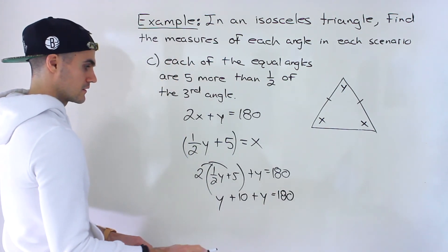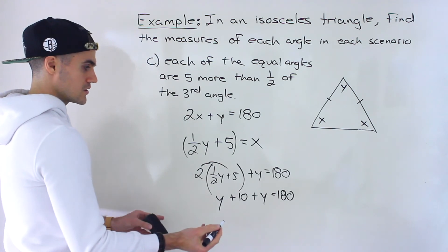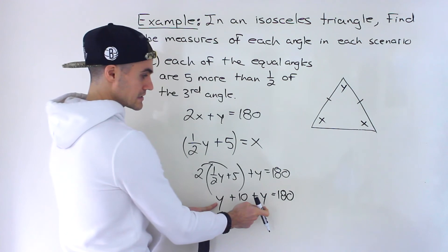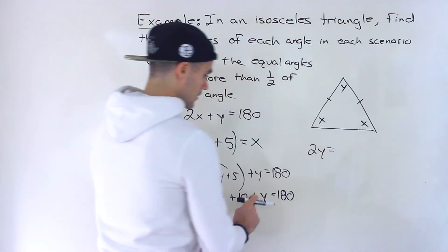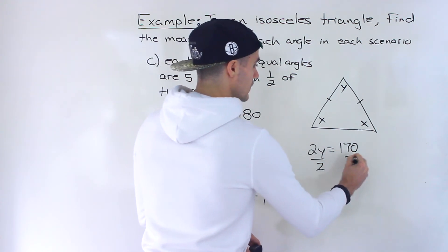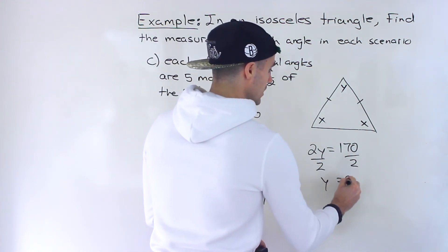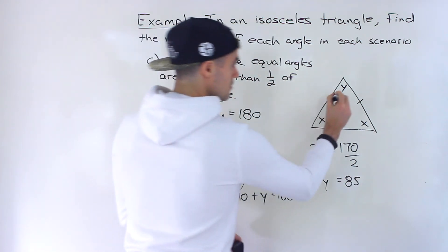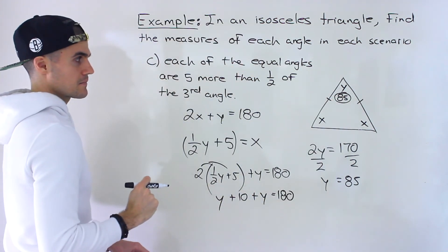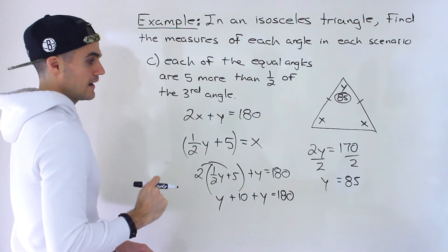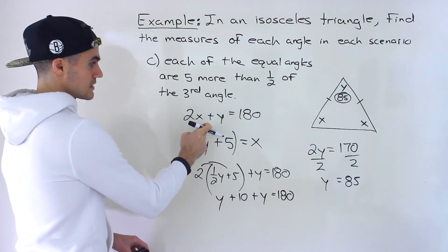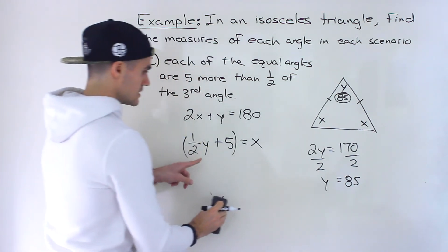Combining like terms gives 2y plus 10 equals 180. Bringing the 10 over: 2y equals 170. Dividing both sides by 2, y equals 85. So the third angle is 85 degrees. Now we can plug this into our equation for x.